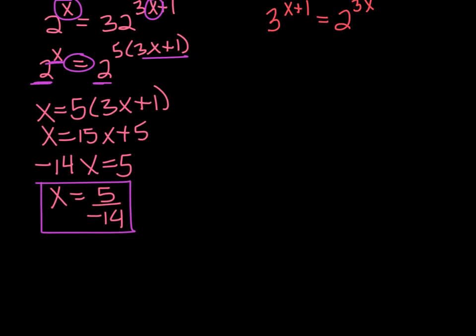So here's one. Now what do you do? How do you make them have like bases when you can't? There's a 3 to the x plus 1 and a 2 to the 3x. So let's do this with a logarithm. We're going to write log base 3 of 2 to the 3x power equals x plus 1.